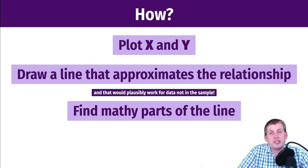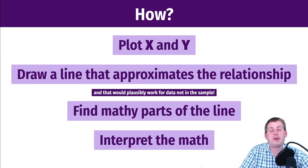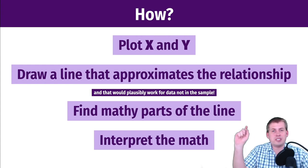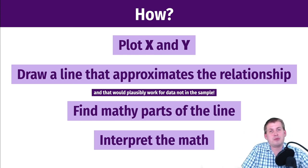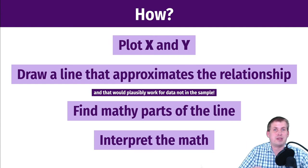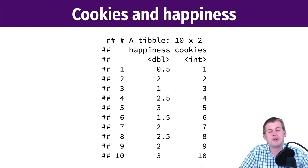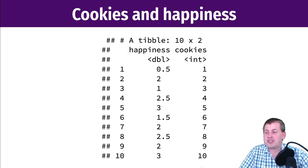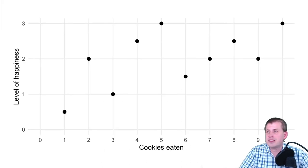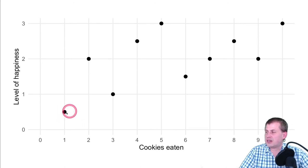Once you draw that line, you find the mathematical parts — the slope and the intercept — and then you interpret those. That is what regression coefficients are. We'll cover these steps using a contrived example about the relationship between the number of cookies you eat and your total level of happiness. This dataset has 10 observations — 10 individual people who ate some number of cookies and reported how happy they were. The happiness scale goes from around zero to four; cookies from zero to ten. Plotting this, the relationship looks positive.